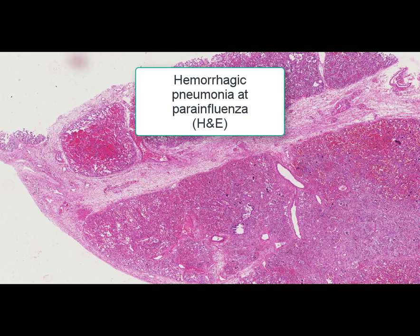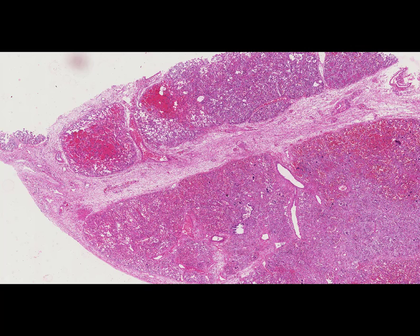On this slide we can see a histological section of lung tissue. It is stained by hematoxylin and eosin, and the name of the slide is hemorrhagic pneumonia at parainfluenza. Parainfluenza is an influenza-like acute infectious disease caused by parainfluenza viruses, characterized by predominant affection of the respiratory airways and moderate intoxication.